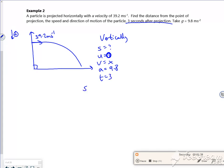So using S equals UT plus half AT squared, so S is 0 times 3 plus half 9.8 times 3 squared. That gives me a distance of 44.1 meters.